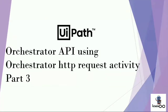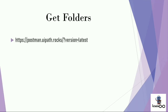Hello and welcome to this series on Orchestrator API using the Orchestrator HTTP Request activity. In the last video, we covered the Orchestrator HTTP Request activity and its properties, as well as the configuration needed to access Orchestrator data from Studio using this activity. In this video, we're going to see how we can access the folder data of our Orchestrator using the Orchestrator HTTP Request activity.